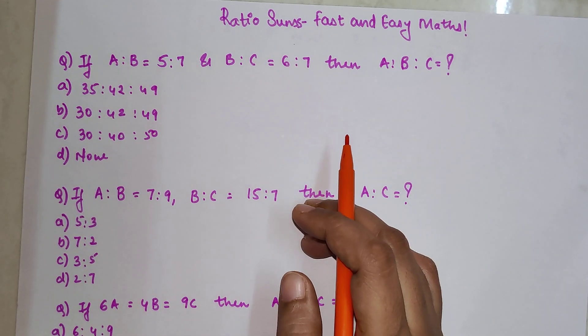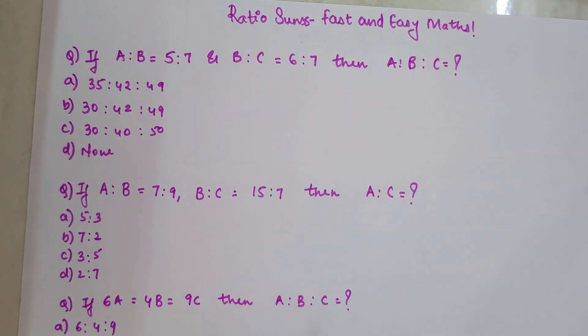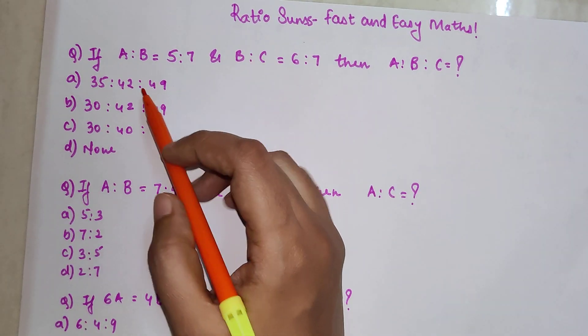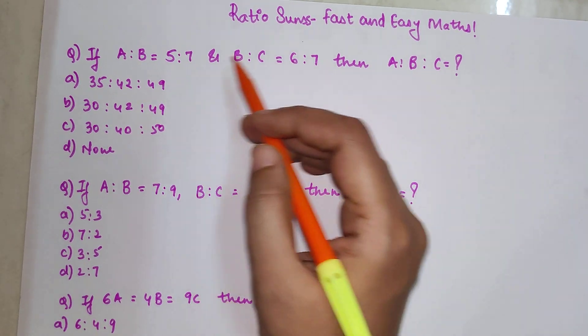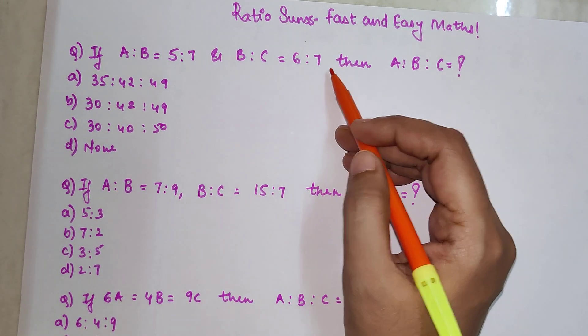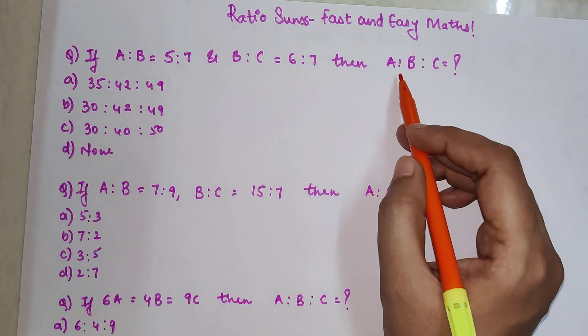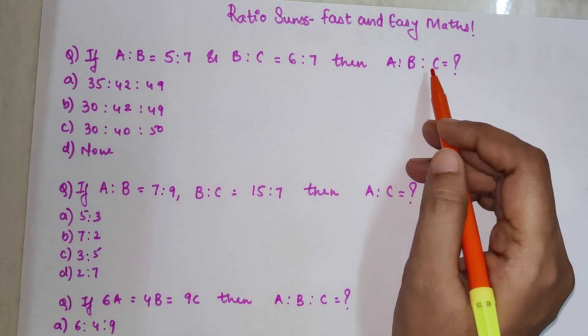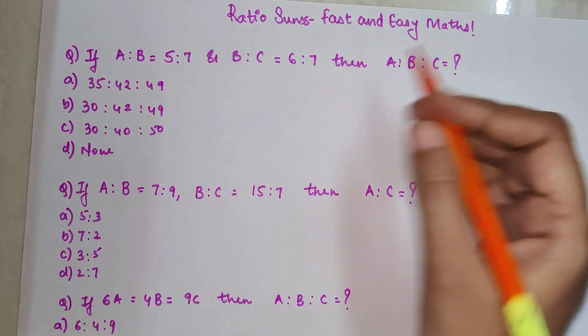At the end there will be a DIY question for you all as well. The first question is: if A is to B is equal to 5 is to 7, and B is to C is equal to 6 is to 7, then we need to find what A is to B is to C.